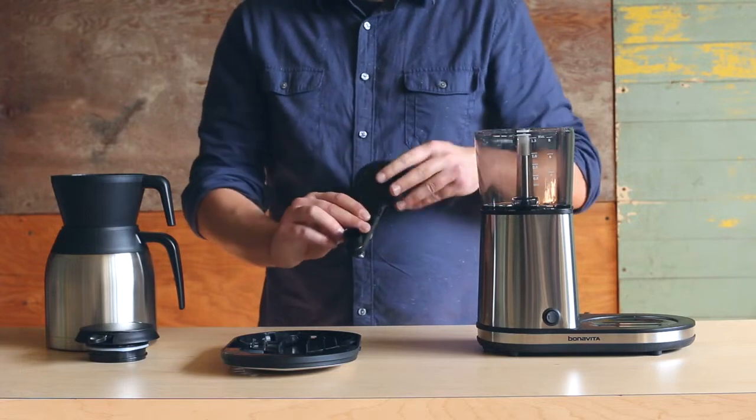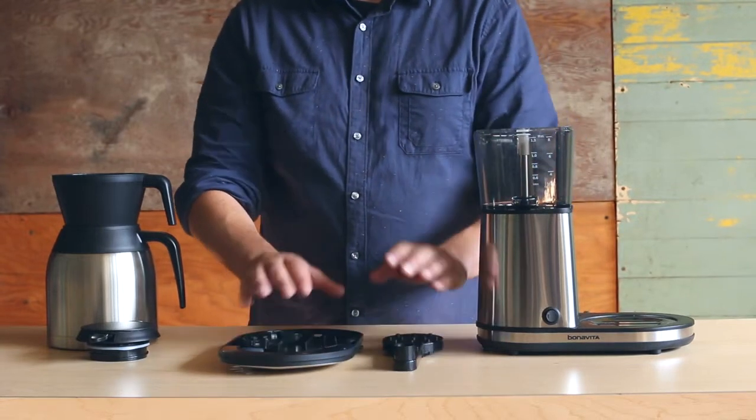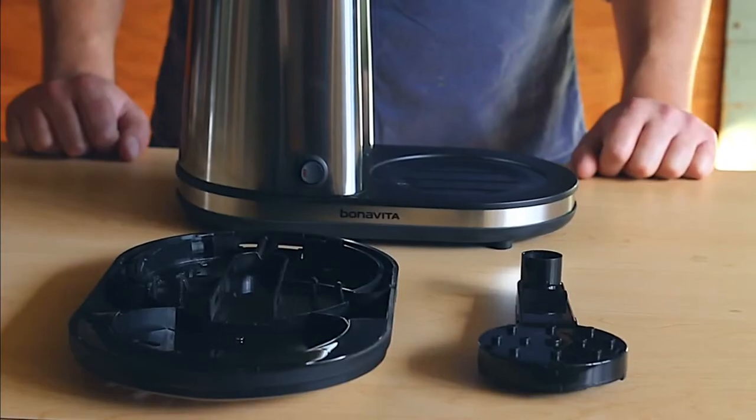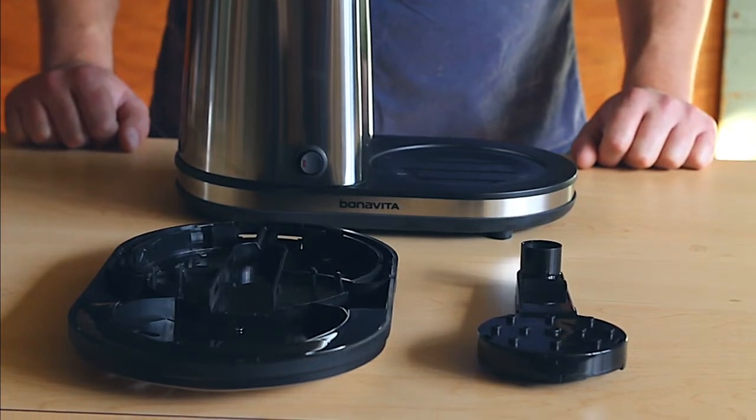You can clean the shower head by washing it on the top rack of your dishwasher or washing it by hand. Once the pieces are clean and dry, it's time to reassemble.